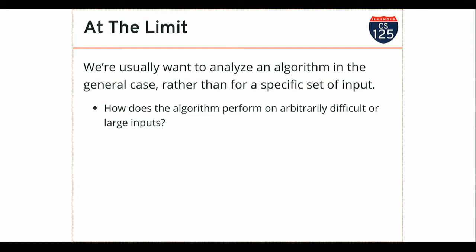This is partly because we want to understand what happens when things get really big — your sorting algorithm might have to handle far more elements than you used when you tested it. Thinking about asymptotic behavior also allows us to ignore certain features of the algorithm that end up not being important on really large inputs — for example, a few local variables that have to get initialized are constant time operations, and as the problem gets really big they contribute less and less to the runtime, so we ignore them.